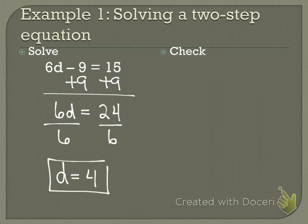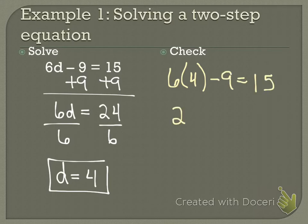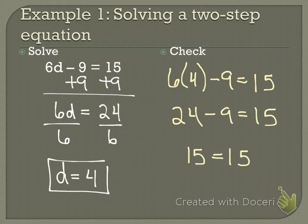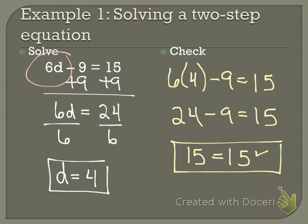Now I just come back here and plug it in: 6 times 4 minus 9 equals 15. 24 minus 9 equals 15. And that's true. 15 equals 15, it checks out. So this example showed us how to solve when multiplication is connected to my variable.